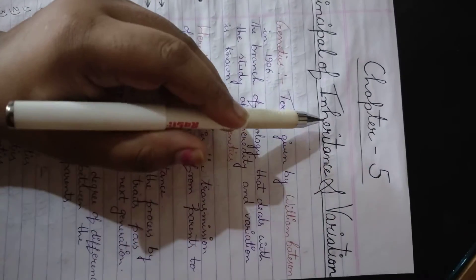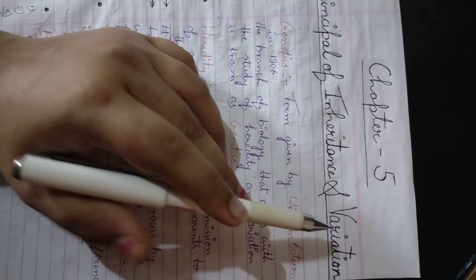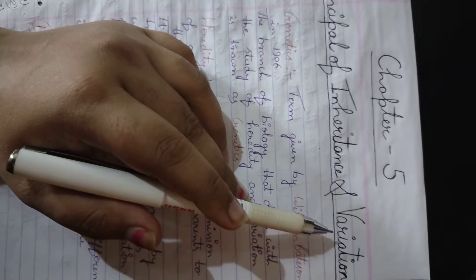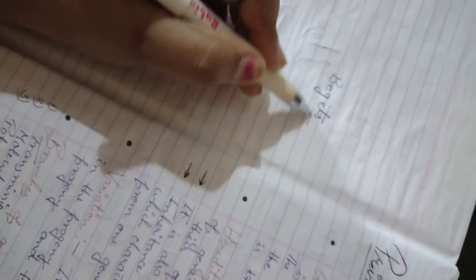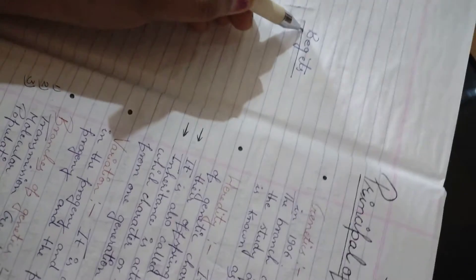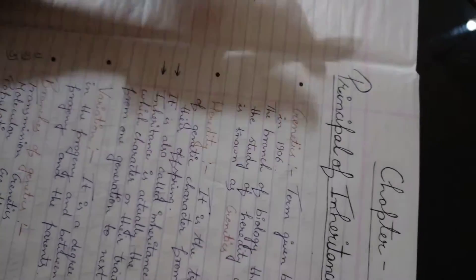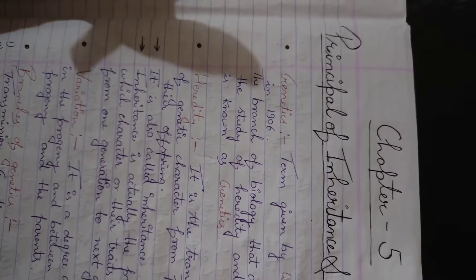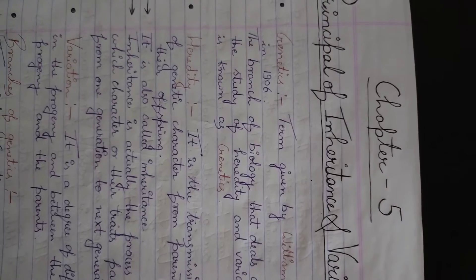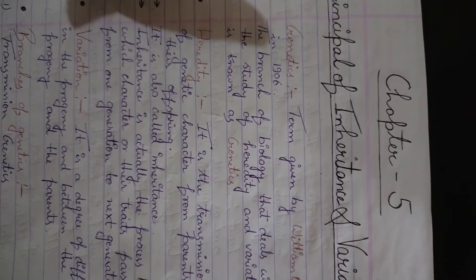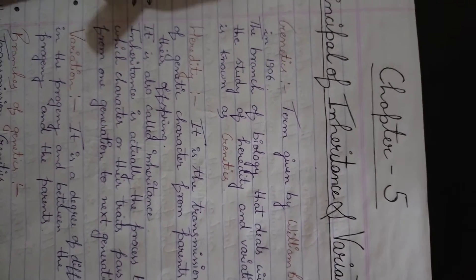First of all you have to understand the meaning of what is inheritance and variation. So I think every one of us heard the word heredity. It means when living things tend to produce offspring which are resemble to them. When living things produce offspring, they are similar to them. We call this heredity.